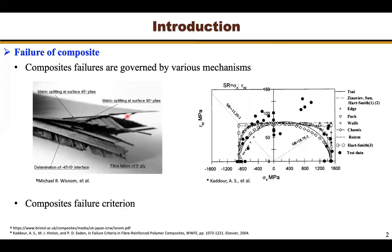A number of failure criteria have been proposed to predict the failure of composites. For example, on the right picture, it shows some of the failure criteria that are tested during the worldwide failure exercise one. These failure criteria can be classified into microscopic and macroscopic criteria. The macroscopic criteria, which assume that failure can be described by macroscopic variables such as average stress or strengths, are more popular in engineering design, as they are more computationally efficient and simple to apply.